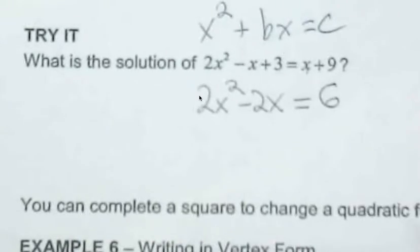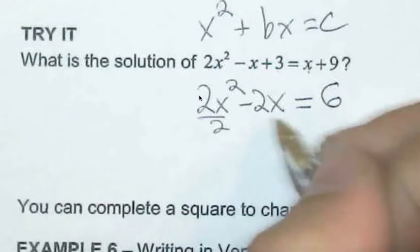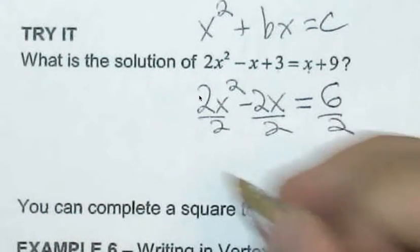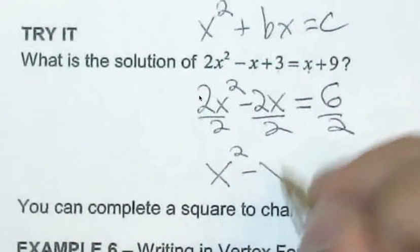If we divide all of the sides by 2, super crucial step, we're left with x squared minus x equals 3.